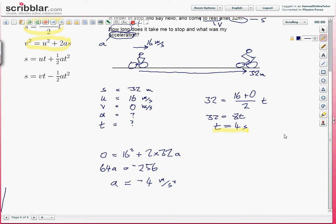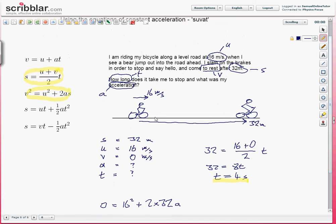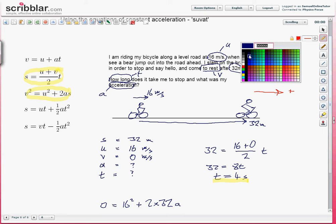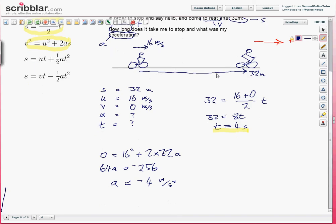So what does the minus sign mean? That means if you go back up to the diagram here, in this diagram, my initial velocity, 16 meters per second, is to the right. The displacement travelled from beginning to end is to the right. I have set this up so that in my diagram and in all of my equations, positive values are to the right. So when I get a negative value for the acceleration, that means that the acceleration is actually to the left. In other words, I'm travelling to the right but I'm slowing down. It's a deceleration of 4 meters per second.